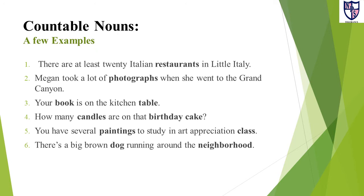A few examples: There are at least 20 Italian restaurants in Little Italy — the verb are is used with restaurants, which is plural. Megan took a lot of photographs when she went to the Grand Canyon. Your book is on the kitchen table — is is the verb and book is a singular noun. How many candles are on that birthday cake? You have several paintings to study in art appreciation class. There is a big brown dog running around the neighborhood.